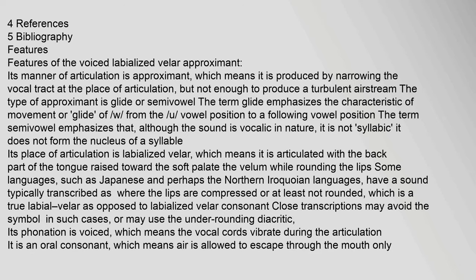Its place of articulation is labialized velar, which means it is articulated with the back part of the tongue raised toward the soft palate, while rounding the lips. Some languages, such as Japanese and perhaps the Northern Iroquoian languages, have a sound typically transcribed as W where the lips are compressed or at least not rounded, which is a true labial-velar as opposed to labialized velar. Close transcriptions may avoid the W symbol in such cases, or may use the under-rounding diacritic.